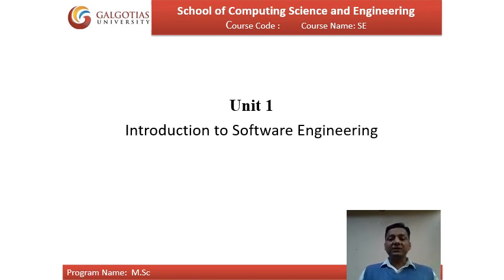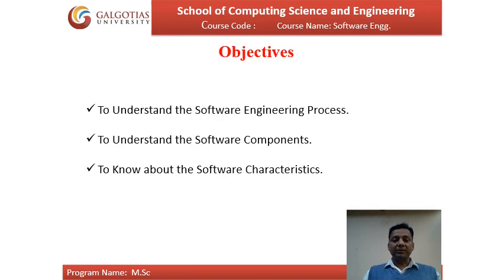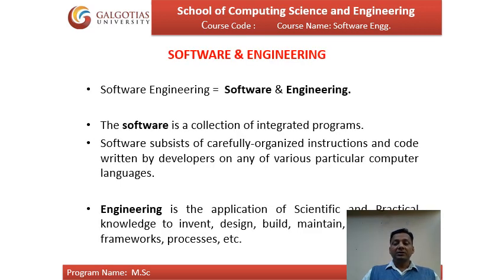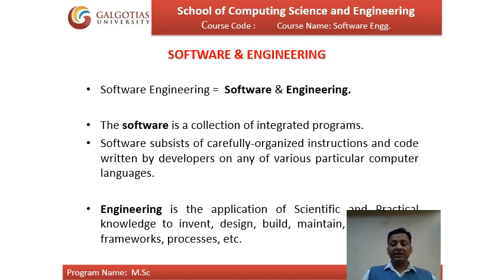Unit 1: Introduction to Software Engineering. The objectives of this unit are to understand software engineering processes, understand the different software components, and know the characteristics of good quality software. Software is a collection of integrated programs — carefully organized instructions and code written by developers in various programming languages. Engineering is the application of scientific and practical knowledge to invent, design, build, and maintain frameworks, processes, etc.